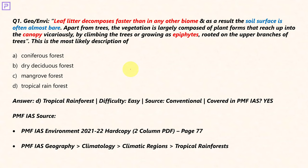Coming to the first question: leaf litter decomposes faster than in any other biome and as a result, the soil surface is almost bare. Apart from trees, the vegetation is largely composed of plant forms that reach up into the canopy vicariously by climbing the trees or growing as epiphytes. This is one of the easiest questions — it offers a lot of clues like epiphytes and canopy, which are distinct features of tropical rainforests. Leaf litter decomposing faster is relevant to tropical rainforests because they have very high levels of humidity and temperature, ideal for decomposition. Coniferous forests have very low temperature, so litter doesn't decompose quickly.